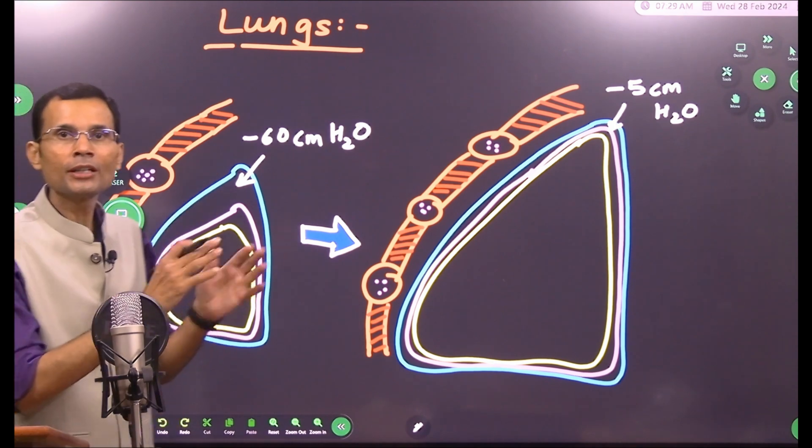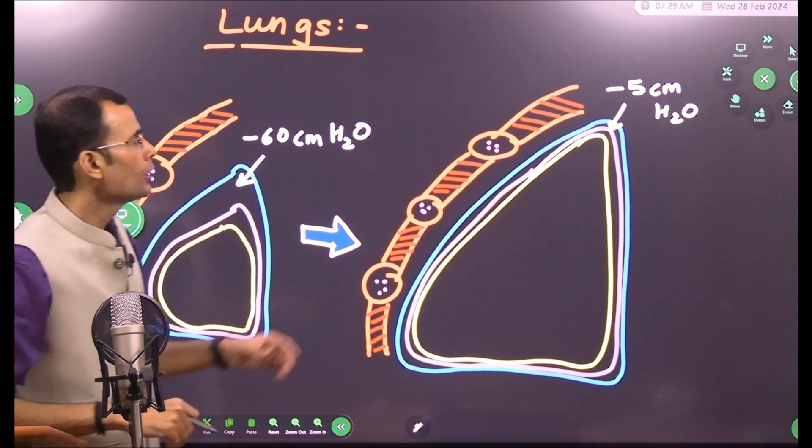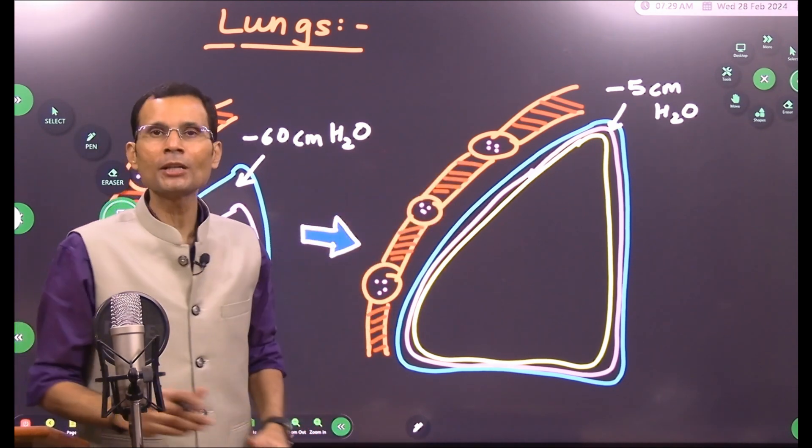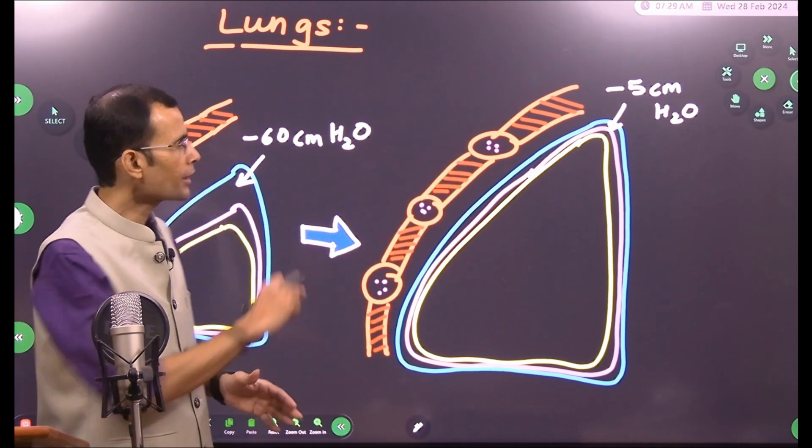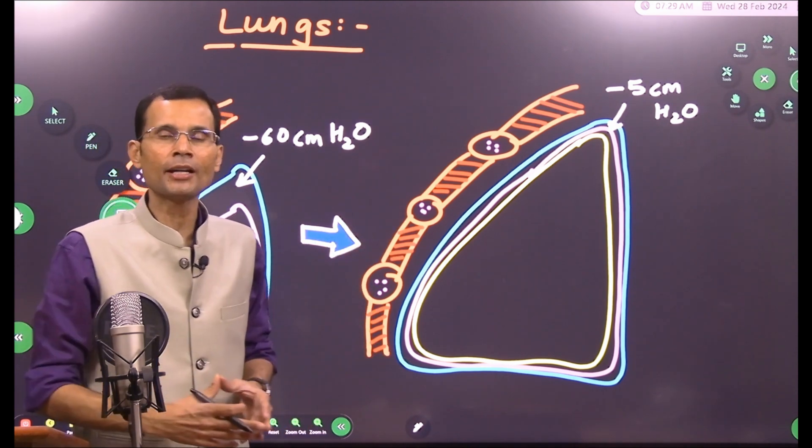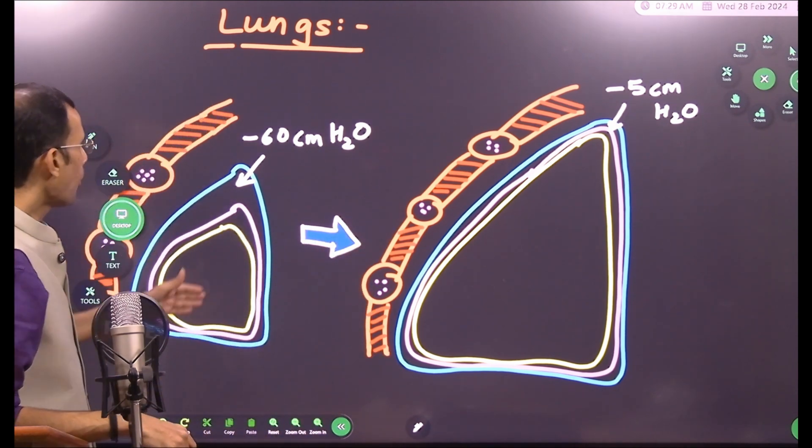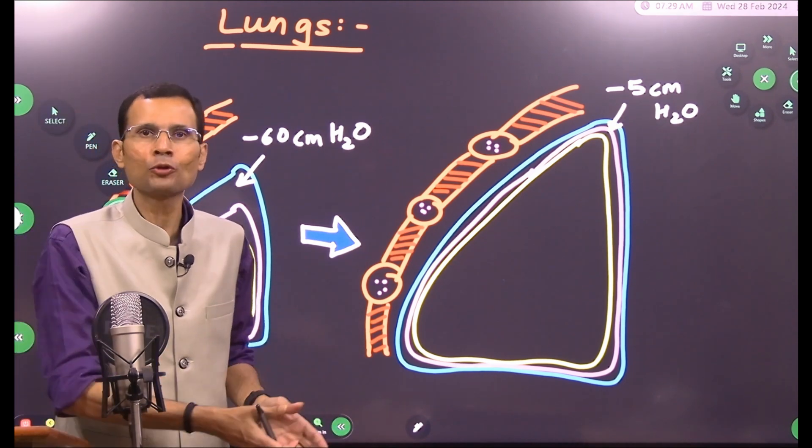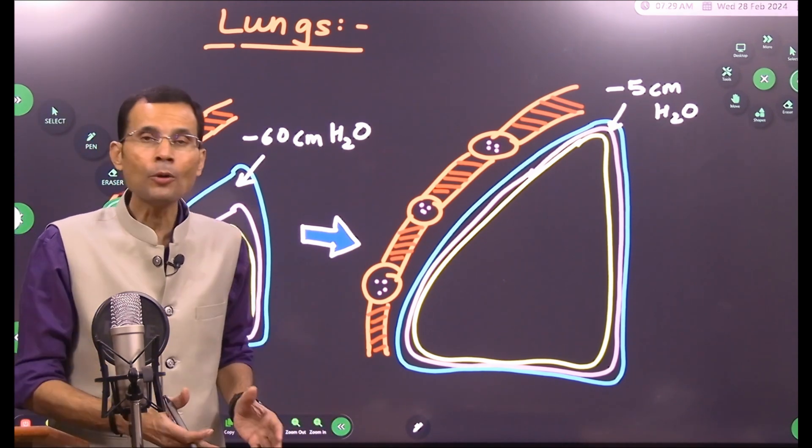the lungs, between the layers of pleura. Mind you, normal breathing, like in normal adults, the pressure is only minus 5 centimeters of water around the lungs to keep them distended. But when a baby is born, the lungs are in a collapsed state. They were not functioning so far inside the uterus, but now they have to be distended and start functioning.